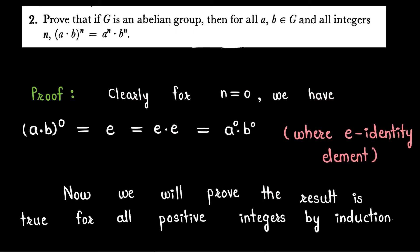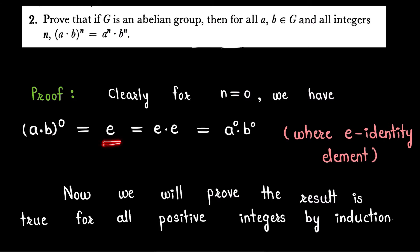Let us start our proof. When n = 0, we have (a·b)^0 = E, where E is the identity element of group G. This E can be written as E·E, which equals a^0 · b^0. So the result is true when n = 0.